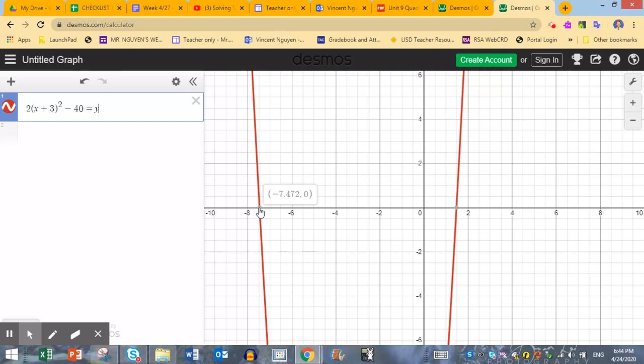So one of them is at negative 7.472. I'm going to go ahead and plot those points for you. So negative 7.472, what was it again? 0.472, right? 472, yeah. I'm going to go here. Negative 4.472, 0.